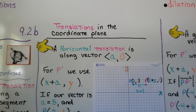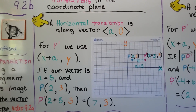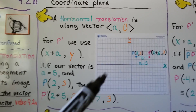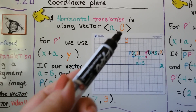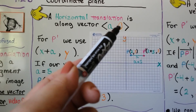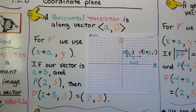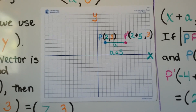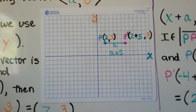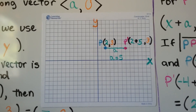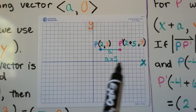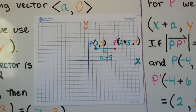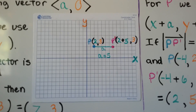For translations in the coordinate plane, a horizontal translation is along vector <a, 0>, because we have a horizontal change but not a vertical one. The value of the horizontal change is a, and our vertical change is zero. If we look at our diagram, we see our pre-image P is at (2, 3), and there's going to be a horizontal change of 5, so a equals 5. The y-value stays 3 because zero is added to it.